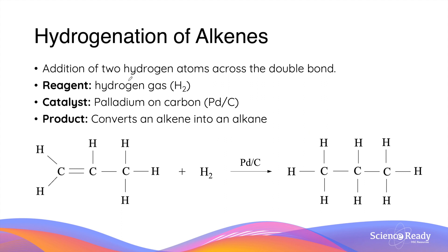Hydrogenation is a reaction between an alkene and hydrogen gas. This reaction adds two hydrogen atoms to the carbon atoms across the double bond. Unlike previous addition reactions, however, this reaction requires a metal catalyst — for example, palladium on carbon, commonly represented by the symbol Pd/C. This reaction converts an alkene, for example propene, to its alkane counterpart, propane.